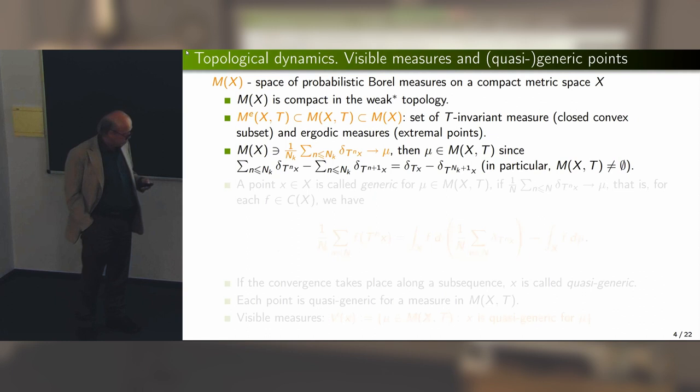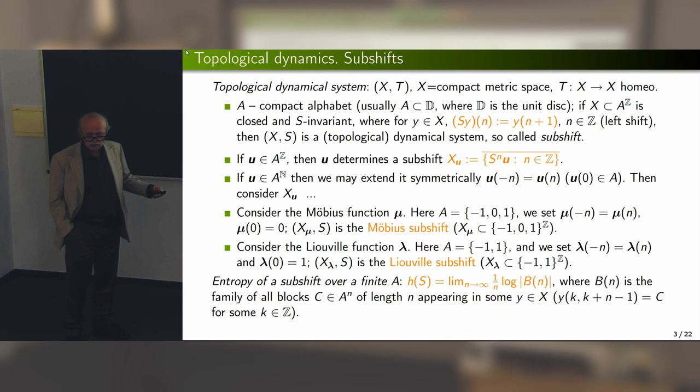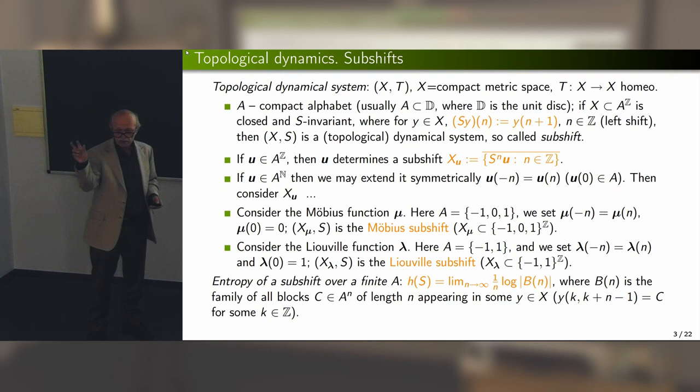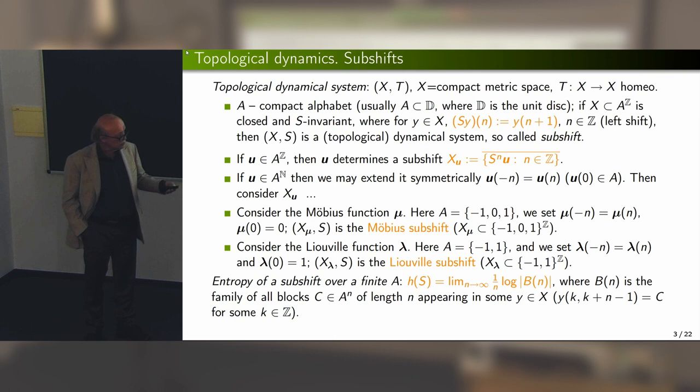We need the notion of the topological entropy of a dynamical system. Fortunately, in the context of subshifts this is much easier. Fix n, consider all points in your subshift, look at windows of length n, and count how many distinct blocks you obtain. Take the log of that count; you obtain a sub-additive sequence. Dividing by n and taking the limit gives the topological entropy of the subshift.